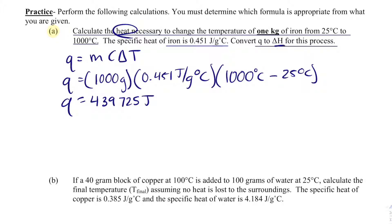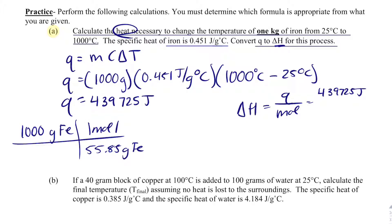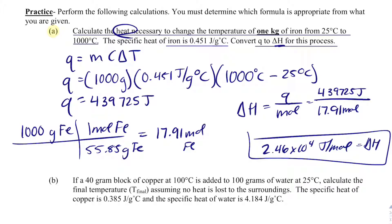Now convert Q to delta H. Delta H equals Q divided by moles. We have Q = 439,725 joules. Converting 1,000 grams of Fe: 1,000 ÷ 55.85 = 17.91 moles of Fe. So delta H = 439,725 ÷ 17.91 = 2.46 × 10⁴ joules per mole. This is positive, which makes sense because the temperature increased — the process is endothermic.